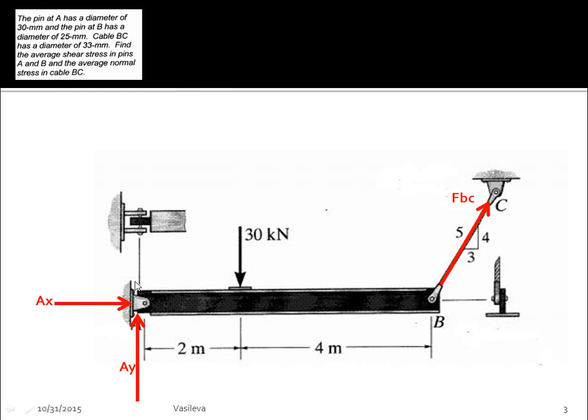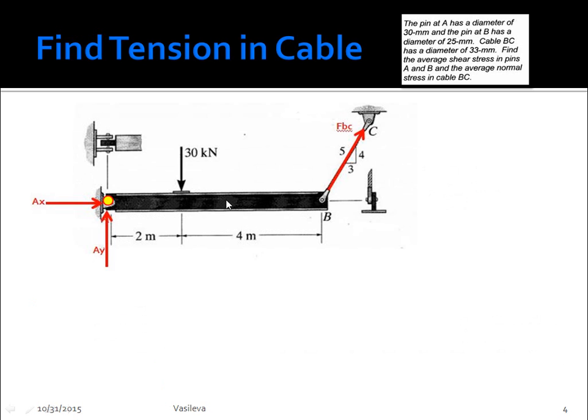So the first thing you need to start off with is drawing the forces, the unknowns that you're going to have to find. I am going to pin it here and try to find FBC first. So I pin it here and then I just do the sum of the moments about point A. We have negative 30 kilonewtons times 2 meters. That's this force and that would cause a clockwise rotation, so it's negative. And then plus 4 fifths FBC times 6. It's 4 fifths because that is the sine component of FBC. So then we end up with FBC equals 12.5 kilonewtons.